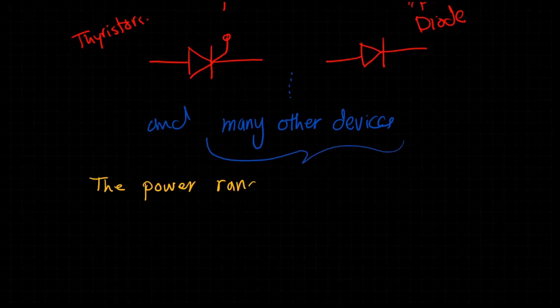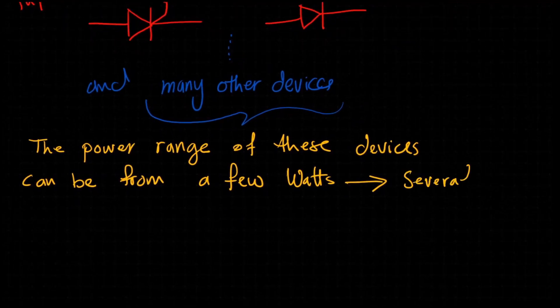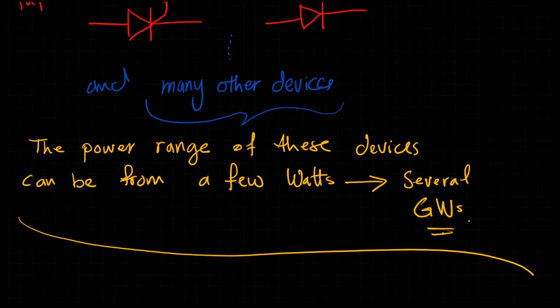It's very important now to know that the power range of these devices can be something from a few watts, similar to what we use in power banks and mobile chargers, to several gigawatts, and that is usually handled in high power systems such as high voltage DC grids.